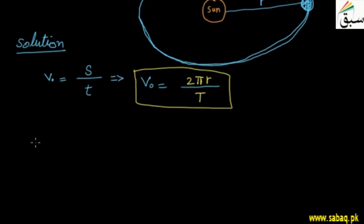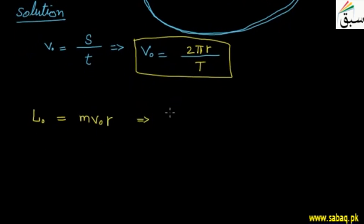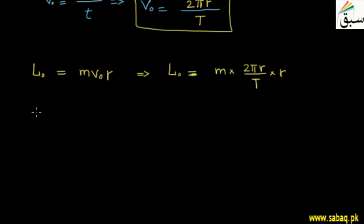We need to calculate orbital angular momentum L₀. The formula is L₀ = M × v₀ × R, where M is Earth's mass, v₀ is orbital velocity, and R is the radius of the orbit. If we substitute v₀ = 2πR/T into this formula, we get L₀ = M × (2πR/T) × R, which gives us L₀ = 2πMR²/T.